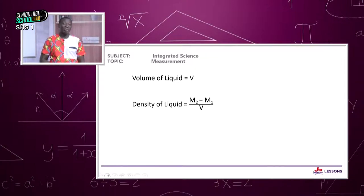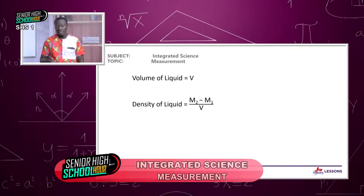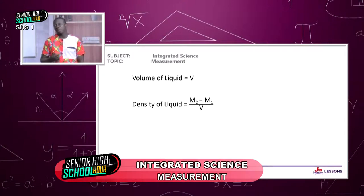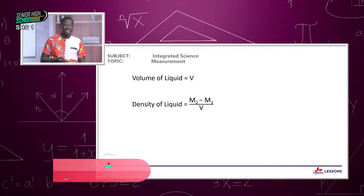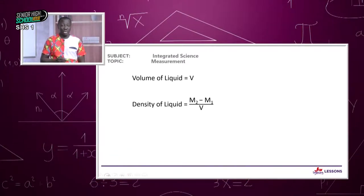To determine the density of any liquid, you need three things: a weighing scale, a beaker, and a burette. Sometimes you can use a measuring cylinder, but you won't get as sharp a volume reading as with the burette. So the density of the liquid is given as (M2 minus M1) divided by V.